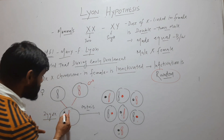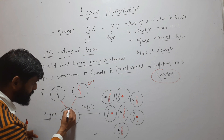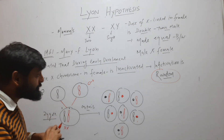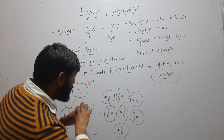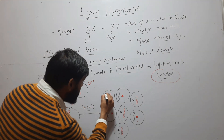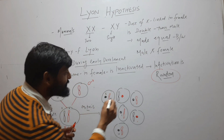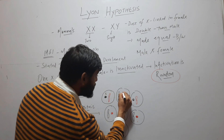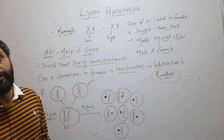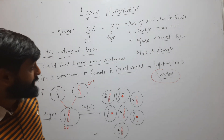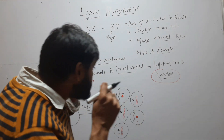Suppose one X chromosome is number one and the other is number two. So in some cells, number one is inactivated. But in some other cells, number two is inactivated. So this is called random inactivation.